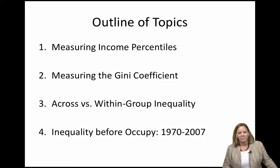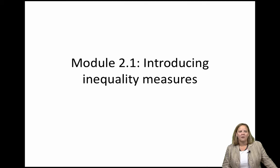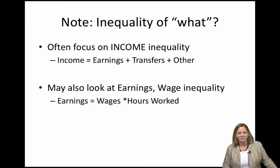In the following module, we'll distinguish between inequality between groups and inequality that occurs within a group defined by some observable trait or characteristic. Often, when we speak of income inequality, we focus on specific parts or components of income as well. Income typically includes all sources of income in a household, including earnings of all adults, as well as government and other transfers, and possibly other sources such as gifts.